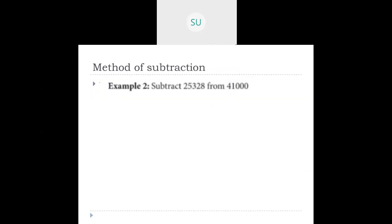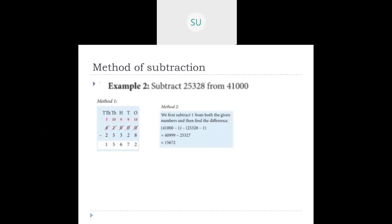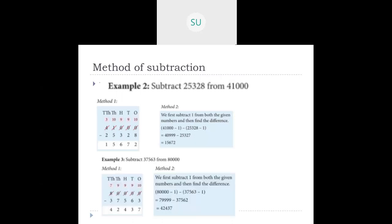We also saw another method for when the minuend has too many zeros, because zero is always smaller than any number so you'd keep borrowing. Instead, you subtract 1 from both numbers. That gives you two new numbers you can subtract without regrouping, making the subtraction easier.